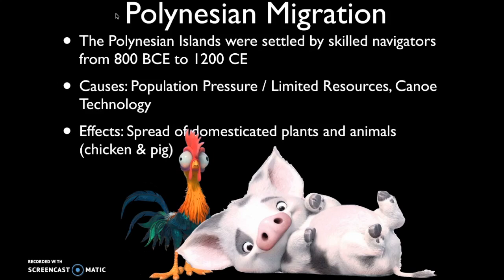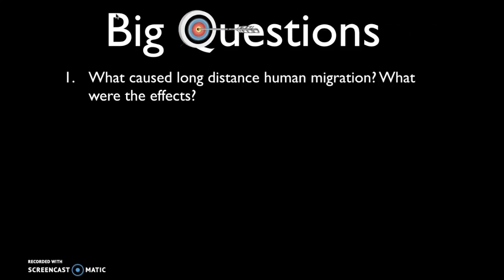If you get a question on the AP test about causes and effects of migration, always keep in mind those major causes and effects. Causes include population pressure, limited resources, and advanced technologies that allowed groups to successfully migrate and displace existing peoples. The major effects include the spread of agricultural technologies and iron technologies — very important when talking about early migration in Periods 1, 2, and 3. As a result, you should be able to answer the big question: what caused long-distance human migrations, and what were the effects? Thanks for watching.